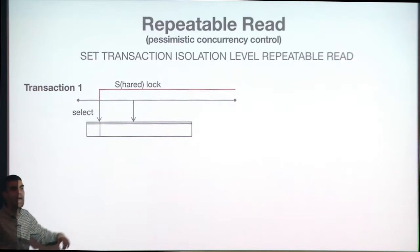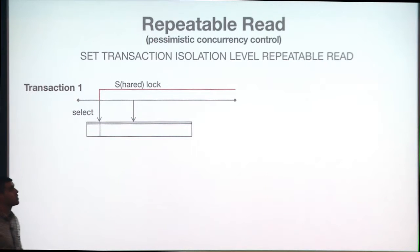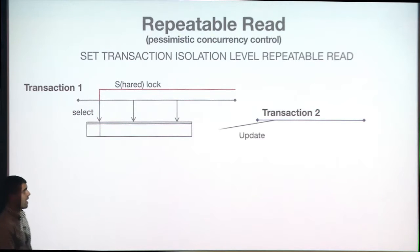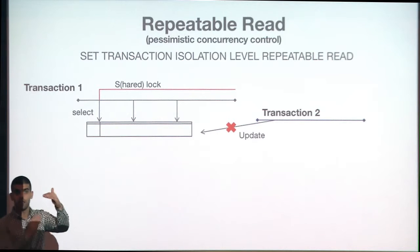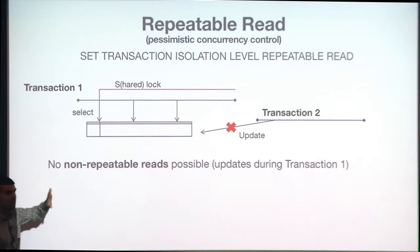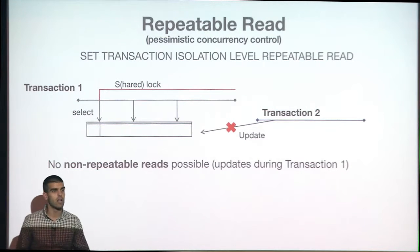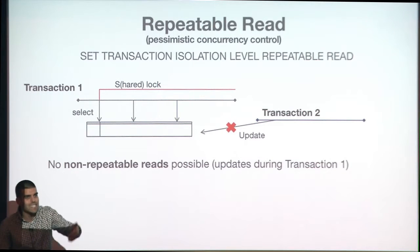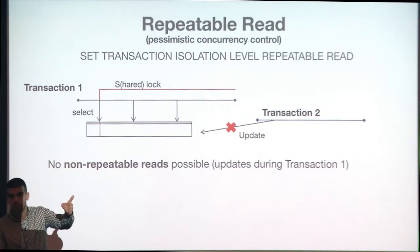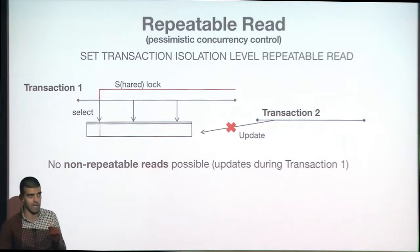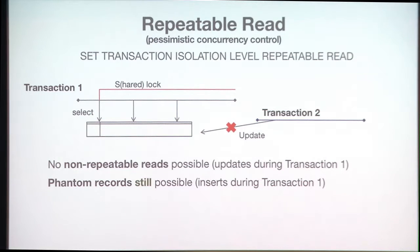That's what changes when you switch isolation levels: I keep the shared lock until the end of the transaction. If someone tries to modify those locked rows, they can't — shared and exclusive are incompatible. So non-repeatable reads are no longer possible; you will always see the same results as in your first select.